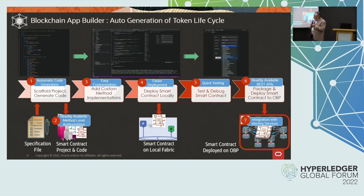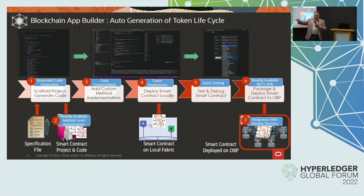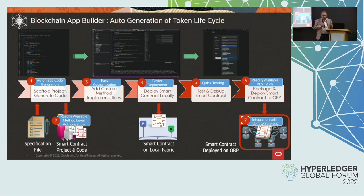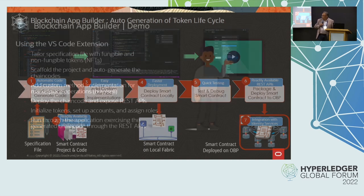So there's a lot of value here: automated code generation, easy customization with custom methods, and much faster deployment and testing. If you're deploying to a remote environment to test, it's difficult to debug and you have to go back and forth, making it slow. But when you test and debug in a local environment, it's much faster and gives much higher productivity for developers. And when you package and deploy it, every chain code method is automatically available as REST APIs that you can invoke.